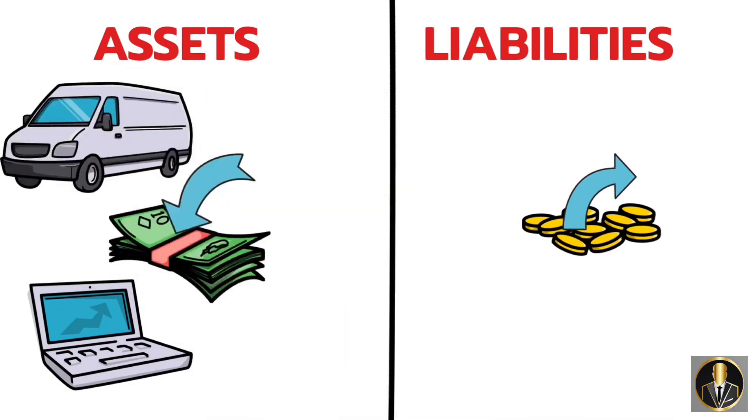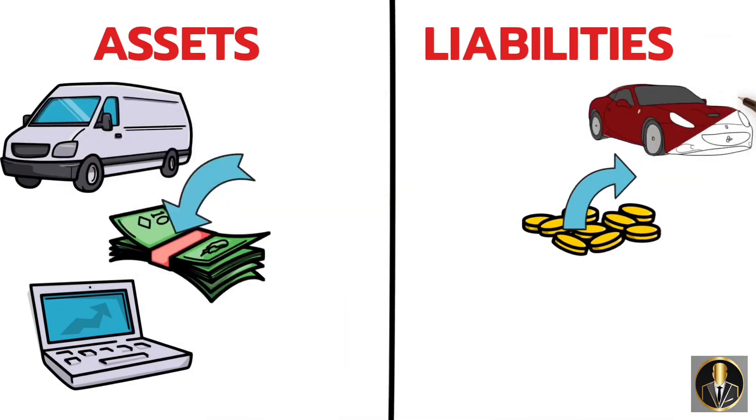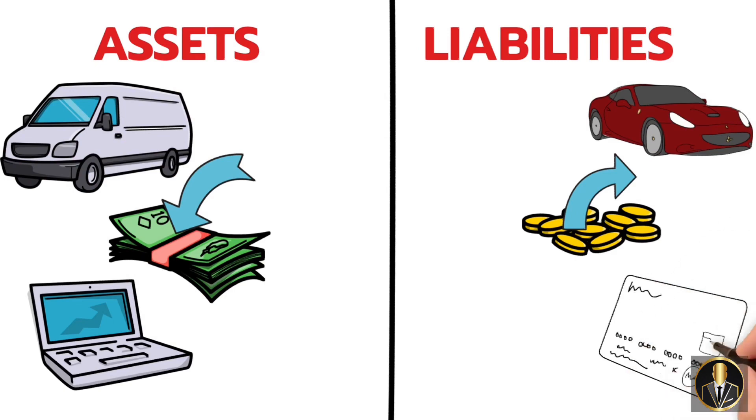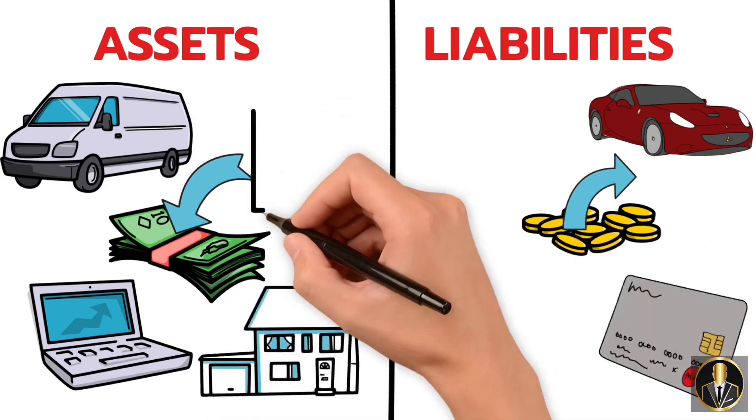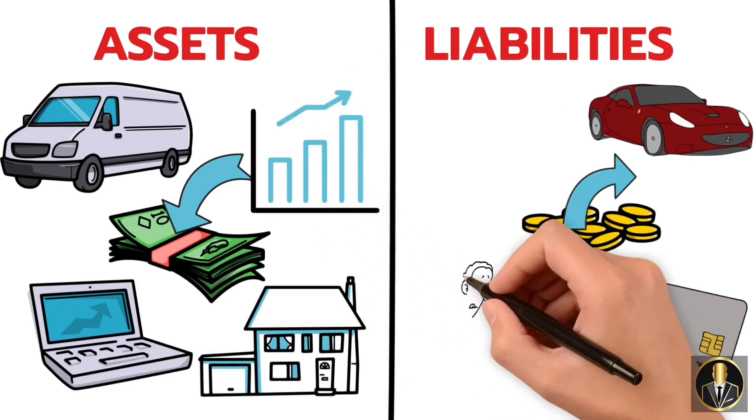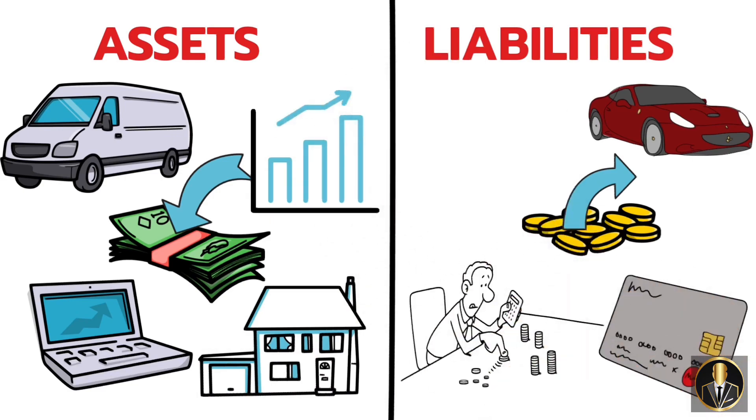Kiyosaki introduces us to the cash flow quadrant, where you can transition from being an employee or self-employed to becoming a business owner or investor. It's time to reshape your perception of assets and liabilities for ultimate financial freedom.